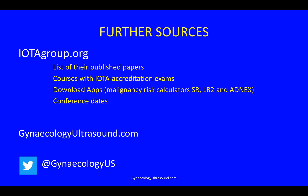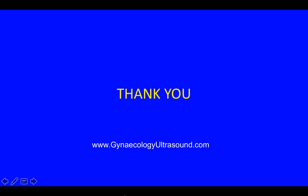Here are some further sources of information. There's iotagroup.org, which has a list of all their published papers, courses where you can become accredited in the IOTA terminology and application, downloadable apps for the risk of malignancy calculators — simple rules, LR2 and ADNEX — and details of their next conferences. There's also more information on this website, or you can follow me on Twitter. Thank you.